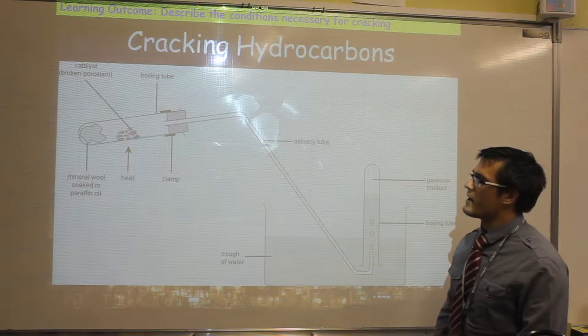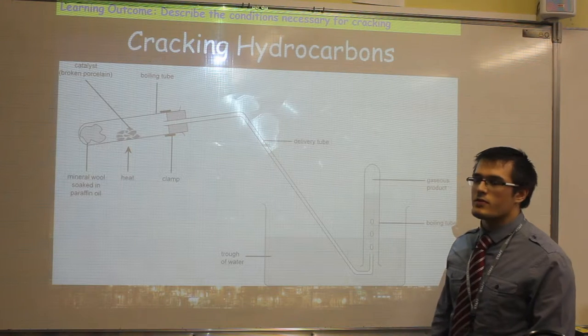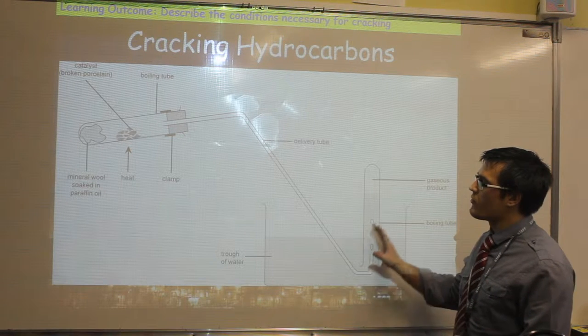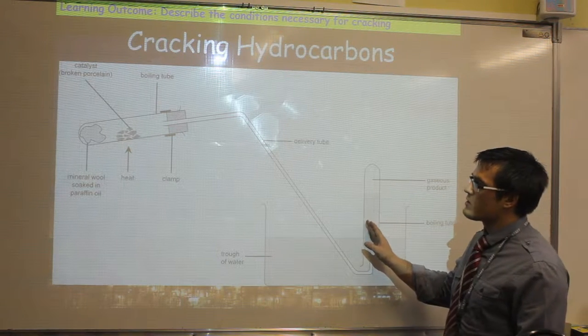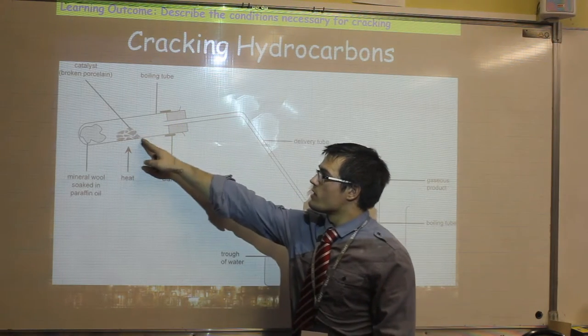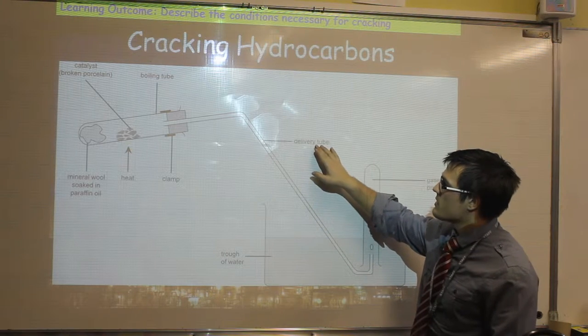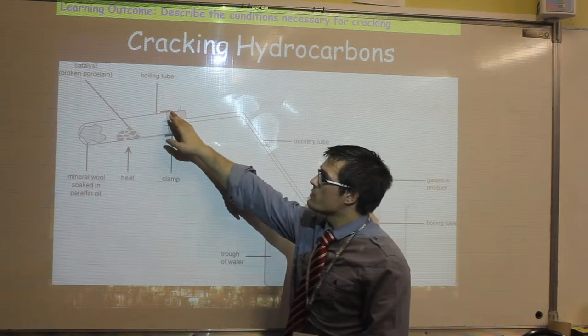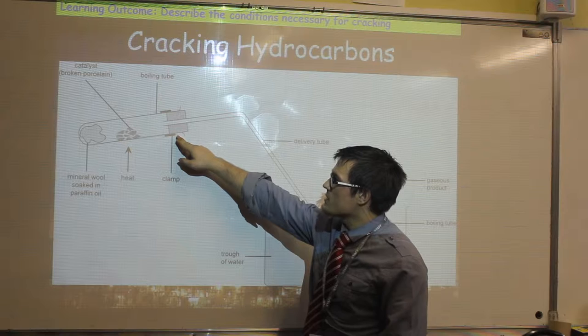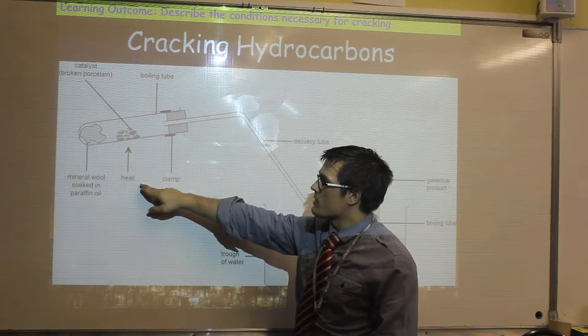This diagram shows a cracking reaction. The important things to note at this point is how the diagram is set out. Firstly, it is drawn using a ruler so that all the lines are straight. It is very important when drawing scientific diagrams that each of the bits of equipment are labelled. However, note that the clamp stand is not drawn, nor is a Bunsen burner.